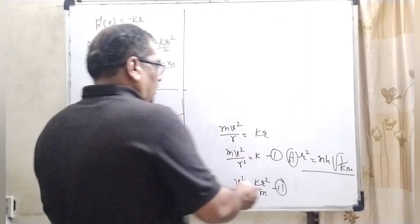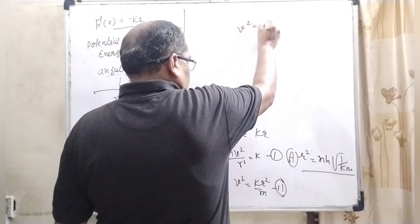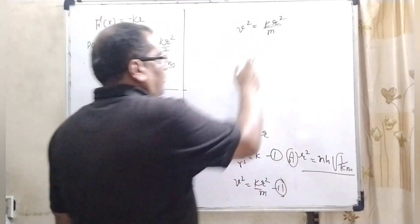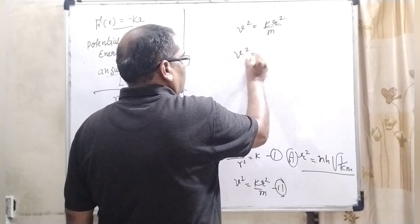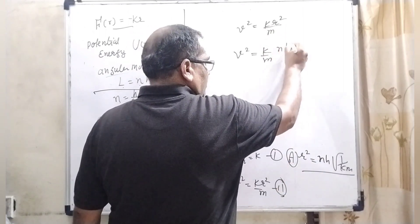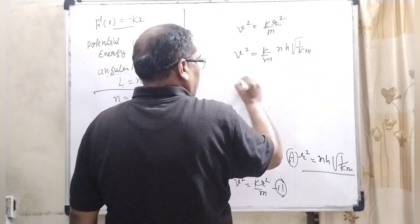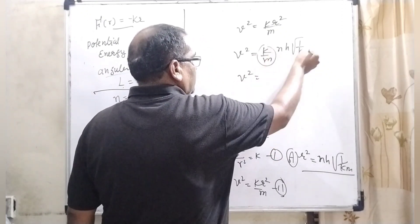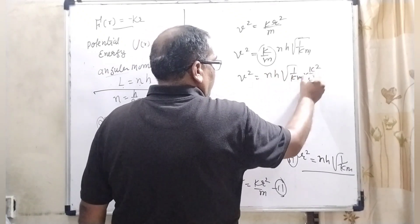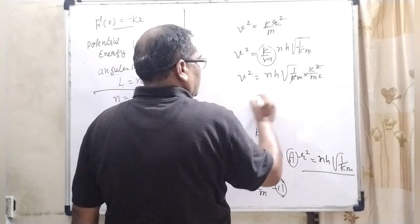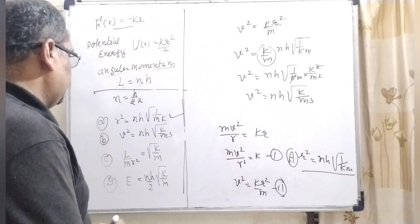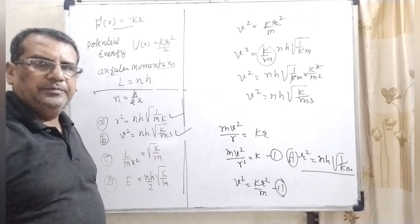Now from equation two, v² = kr²/m. Substituting the value of r² from the first result: v² = (k/m) × nh-bar × √(1/km). Putting k/m inside the root gives √(k²/m²), so cancelling one k: v² = nh-bar × √(k/m³). Therefore option B is also correct.